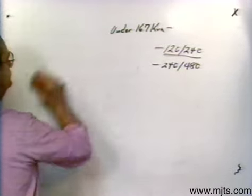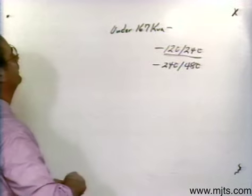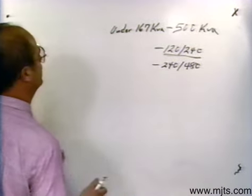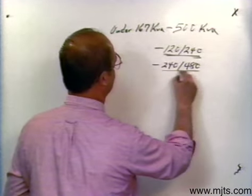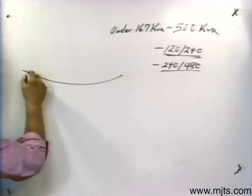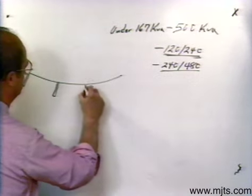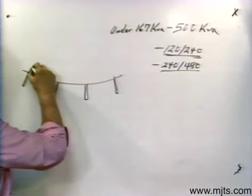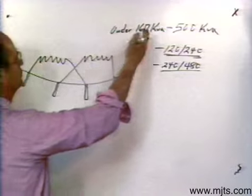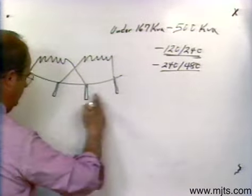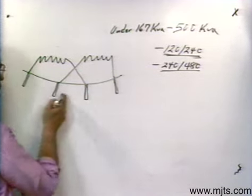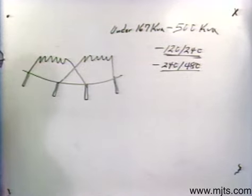If we have a transformer rated anywhere from 167 through 500 kVA, with a low side rating of 1-to-2, then you are going to have a 4-bushing transformer. The way that looks, it will have spade lugs with NEMA hole spaces in the lugs. You will still have the possibility of being series or parallel connected, but because of the high current-carrying capacity, instead of having small connections on the back side of the bushings, you make your connections on the outside. There are no internal connections.